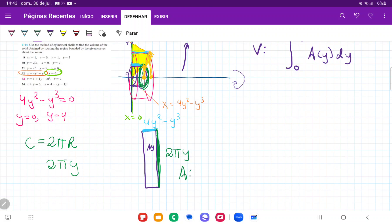And so the area is given by base times height, and the base is 2 pi y times the height, which is 4 y squared minus y cubed.